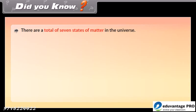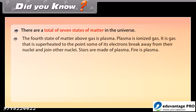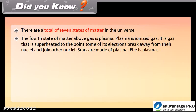Did you know there are a total of seven states of matter in the universe? The fourth state of matter above gas is plasma. Plasma is ionized gas — a gas that is superheated to the point where some of its electrons break away from their nuclei and join other nuclei. Stars are made of plasma. Fire is plasma.